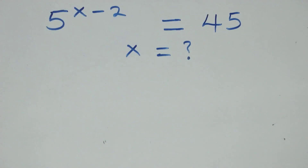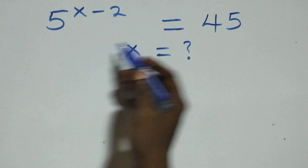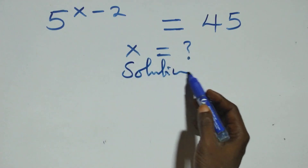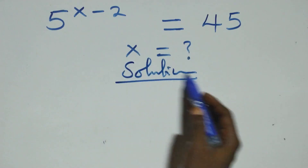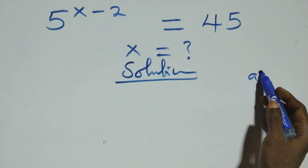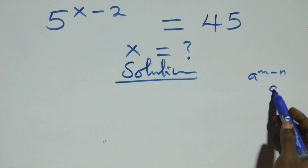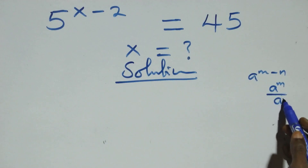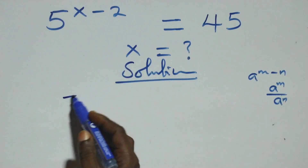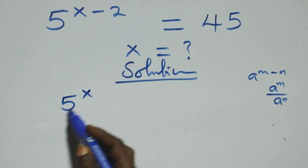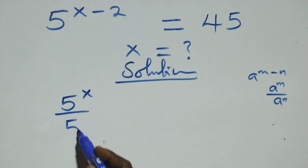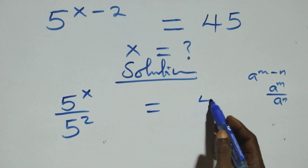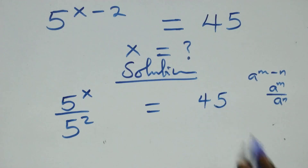Hello, you are welcome. How to solve this nice exponential equation. This follows when we have a raised to power n minus n, which is the same thing as a raised to power n over a raised to power n. That is, here it becomes 5 raised to power x over 5 squared equals to 45 on this side.